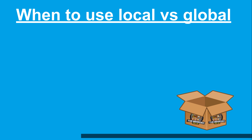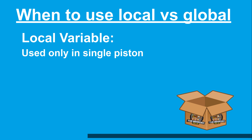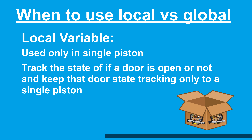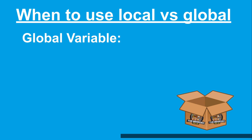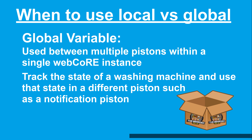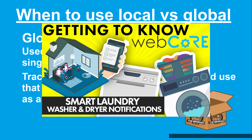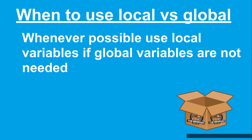Which variable scope to use comes down to how you plan to use the variable. If the variable will only be used within a single piston, then picking local scope makes sense — for example, tracking the status of a door being open when all actions around that door state are contained to a single piston. If you have a variable that will be interacted with by multiple pistons, then a global variable is what you should pick. For example, I use global variables for my smart laundry room piston to keep track of when laundry is done, and that data is also used by my notification piston. Do keep in mind that you should always use local variables whenever possible for maximum performance and stability.